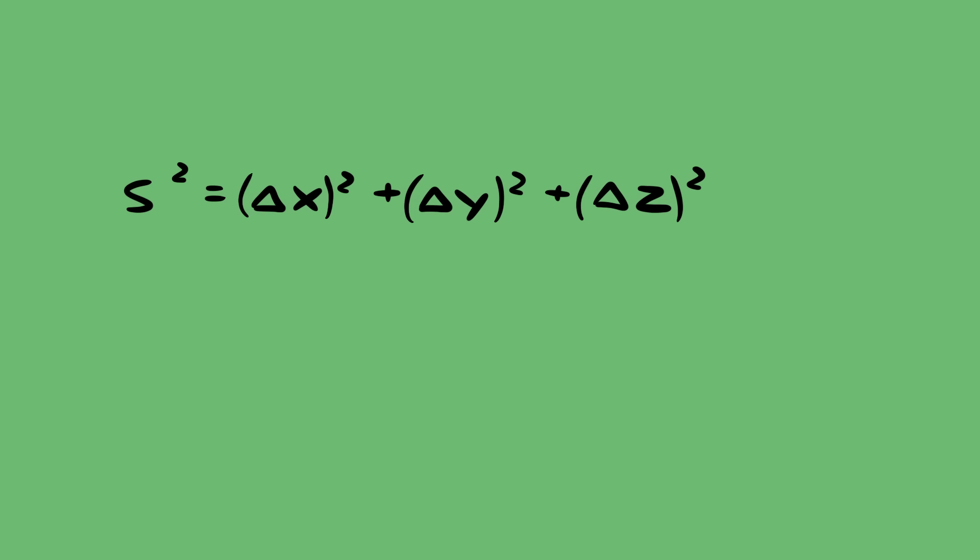We get distance by using the Pythagorean theorem. We get space-time interval by using the Pythagorean theorem, but with time multiplied by the speed of light, and negative.